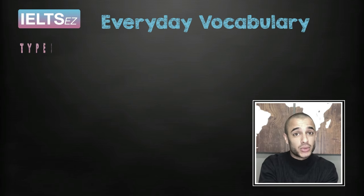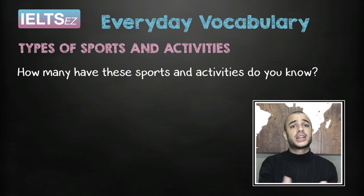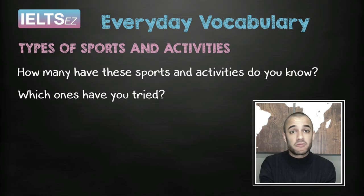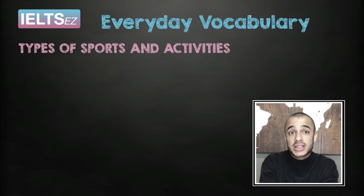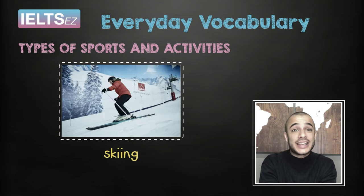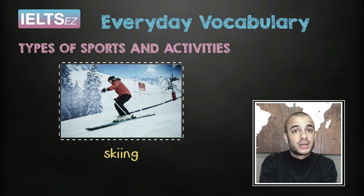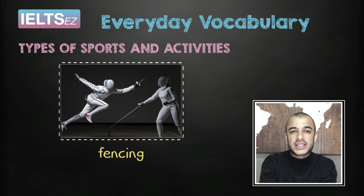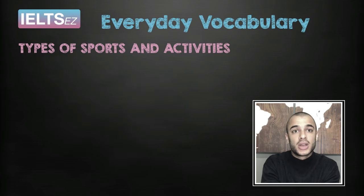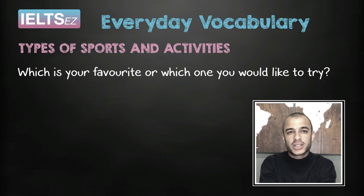Let's go examine some more types of sports and activities. How many of these sports and activities do you know? Which ones have you tried? For me, I haven't done skiing, ballet, fencing or weightlifting. Say these after me: Skiing — not skying. Ballet — notice the T in ballet is a silent letter. Fencing — this is like sword fighting and you can see it on TV when the Olympics is on. My favourite is surfing.